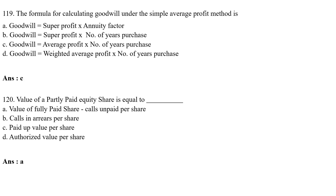The formula for calculating goodwill under the Simple Average Profit Method is — Option A: goodwill = super profit × annuity factor; Option B: goodwill = super profit × number of years of purchase; Option C: goodwill = average profit × number of years of purchase; Option D: goodwill = weighted average profit × number of years of purchase. The correct answer is Option C — goodwill = average profit × number of years of purchase.